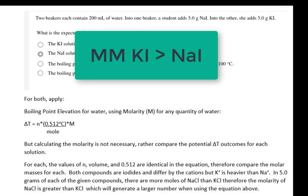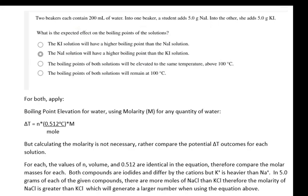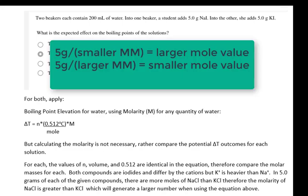Both compounds are iodides and they differ by their cations. The potassium cation is heavier than the sodium. In 5 grams of each of these compounds, there are more moles of sodium chloride than there is potassium, because the sodium has a smaller molar mass.